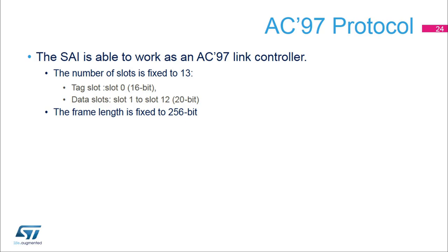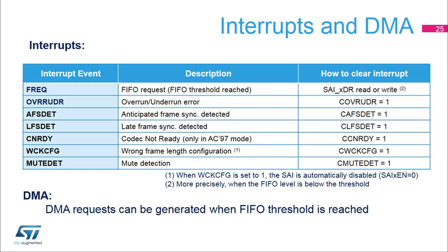The SAI is able to work as an AC97 link controller. When this protocol is used, the frame length, slot number, and slot length are fixed by the hardware. Several events can be enabled in order to generate interrupts: the FIFO request event, the overrun/underrun event, the anticipated or late frame synchronization event, the codec not ready event (only in AC97), and the mute detection event. The WCKCFG event can be used to inform the user that the frame length of the SAI has been improperly programmed. This feature is only available in master mode.